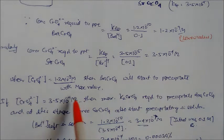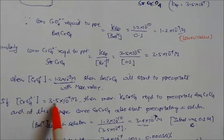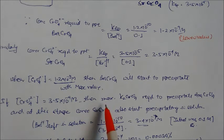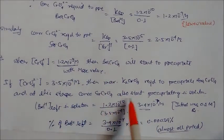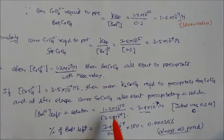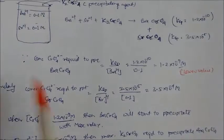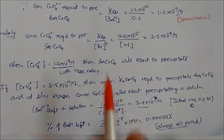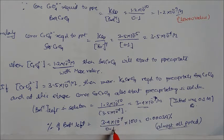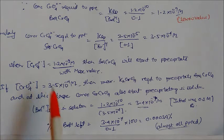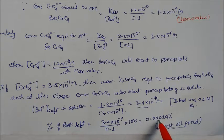When chromate reaches the maximum concentration value, barium chromate starts to precipitate. At that maximum concentration of potassium chromate, strontium chromate also starts precipitating. At that point, the barium remaining in solution is calculated as Ksp divided by the chromate concentration. With initial concentration 0.1 molarity, the remaining barium is a very small fraction. The percent of barium left is that value divided by 0.1 times 100, which is approximately 0.034%, meaning almost all the barium has been precipitated.